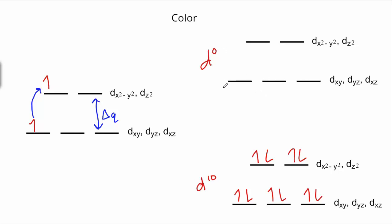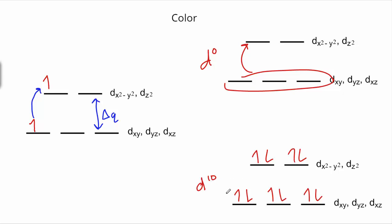The first exception is if you have no d electrons (d0): there are no electrons in the lower set that could get promoted to the upper set, so we won't absorb light corresponding to the crystal field splitting energy. The second exception is if you have 10 d electrons (d10): the lower set is occupied, but all four spots in the upper set are already filled, so no transition can happen there either.